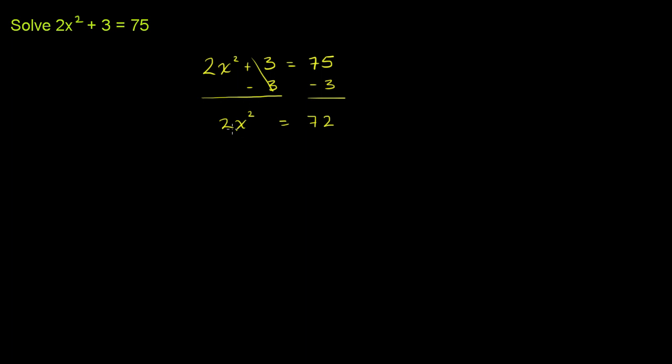Now I want to isolate this x squared. I have a 2x squared here. So I could have just an x squared here if I divide this side, or really both sides, by 2. Anything I do to one side, I have to do to the other side, if I want to maintain the equality. So the left side just becomes x squared. And the right-hand side is 72 divided by 2, is 36. So we're left with x squared is equal to 36.